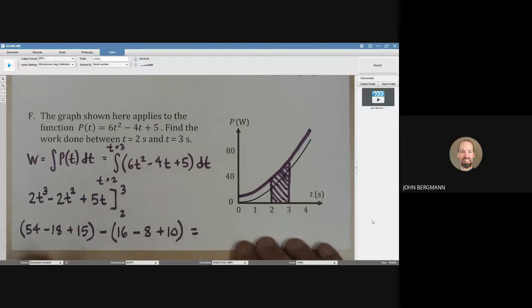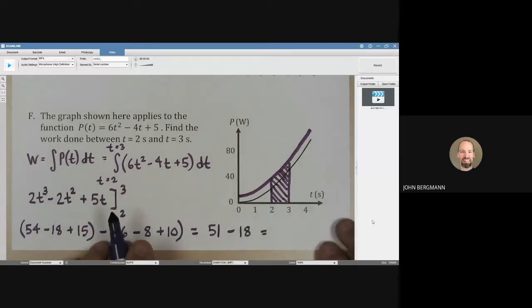So what does that come out to? This first term is coming out to 51. And the second term is going to come out to 16 minus 8 is 8 plus 10 is 18. 51 minus 18, how about 33? 33 joules.